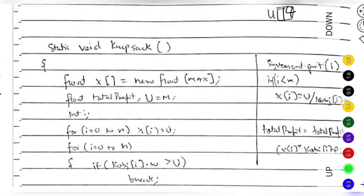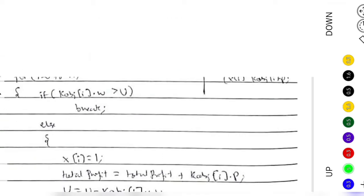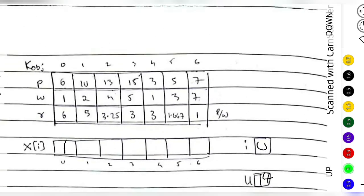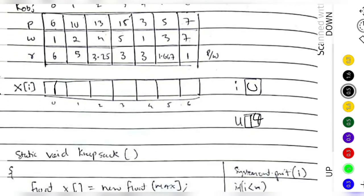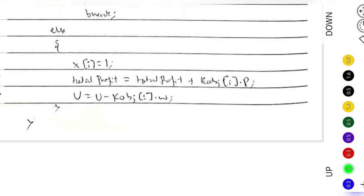Before that, we calculate total profit, which is initially 0. We add k_object[i].p — the profit of that object. Selling 1 kilogram gives a profit of 6, so total profit becomes 6.